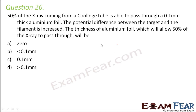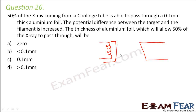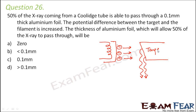If you look at the tube where X-rays are produced, you have a foil and a target material. Electrons move with some velocity and strike the target. The moment electrons strike the target, X-rays are emitted. There is a potential difference maintained between the filament and the target.